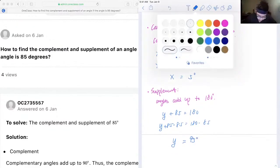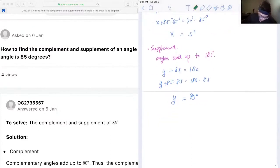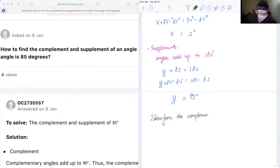So now we can write our conclusion. Therefore, the complement of 85 degrees is 5 degrees, and the supplement of 85 degrees is 95 degrees.